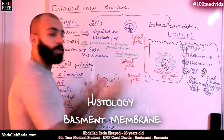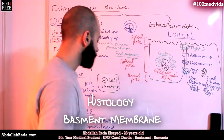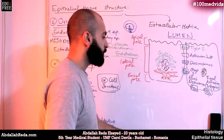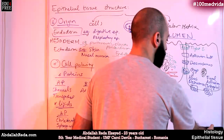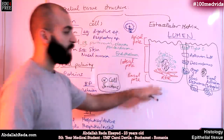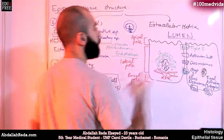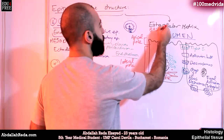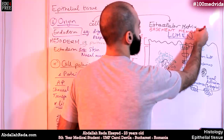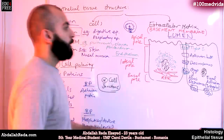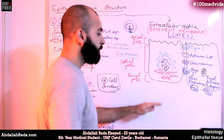We talked a bit about the structure of the cells of the epithelial tissue. Let's go to the next thing, which is the extracellular matrix. The extracellular matrix in the epithelial tissue is arranged in a certain fashion that makes up a membrane on which the epithelial tissue rests. This is called the basement membrane, and that basement membrane is divided into different layers.